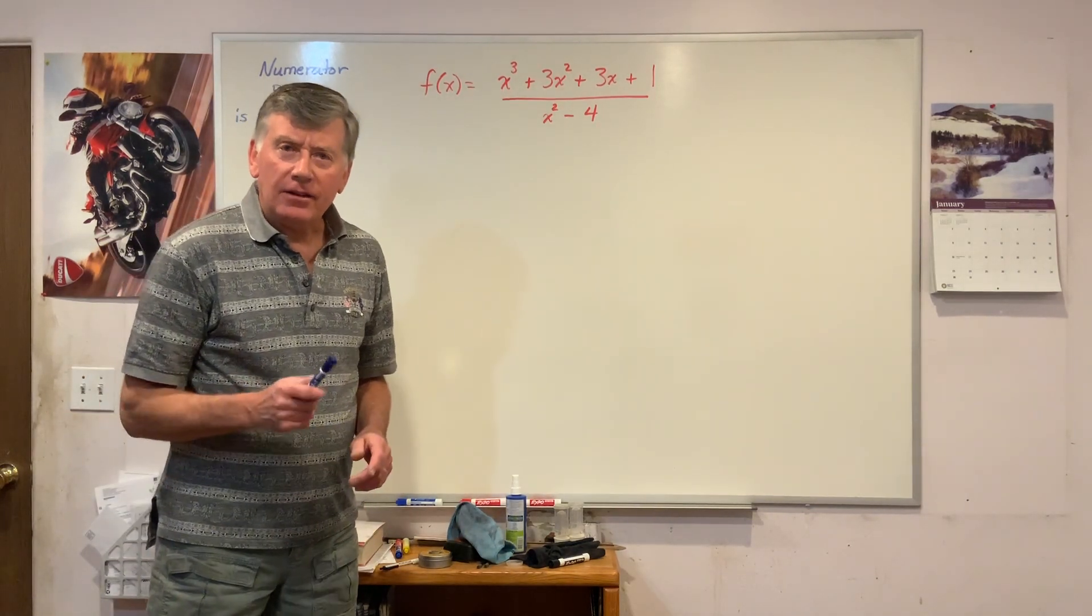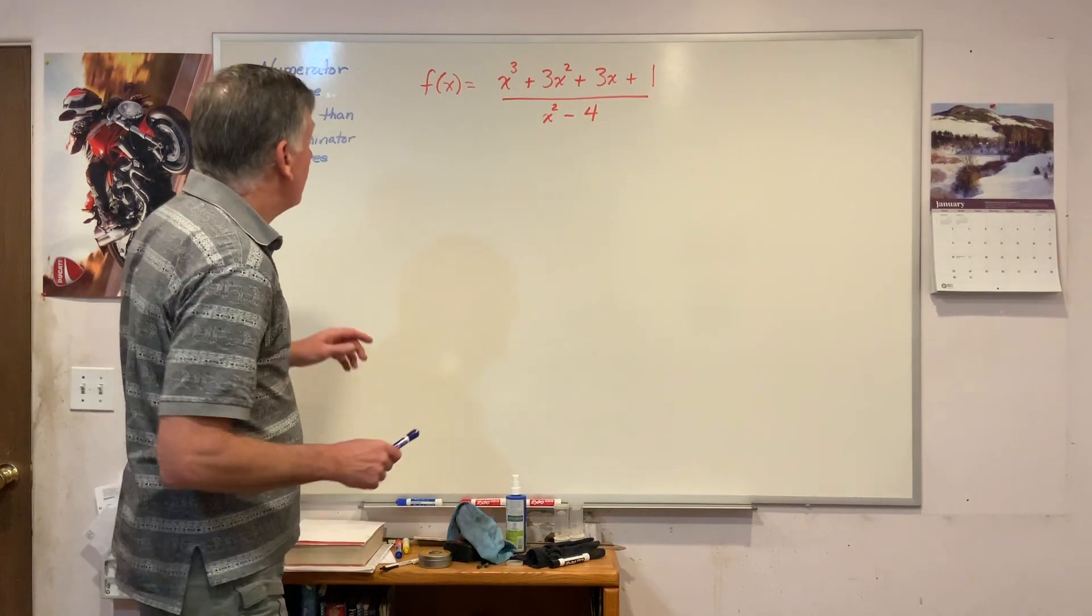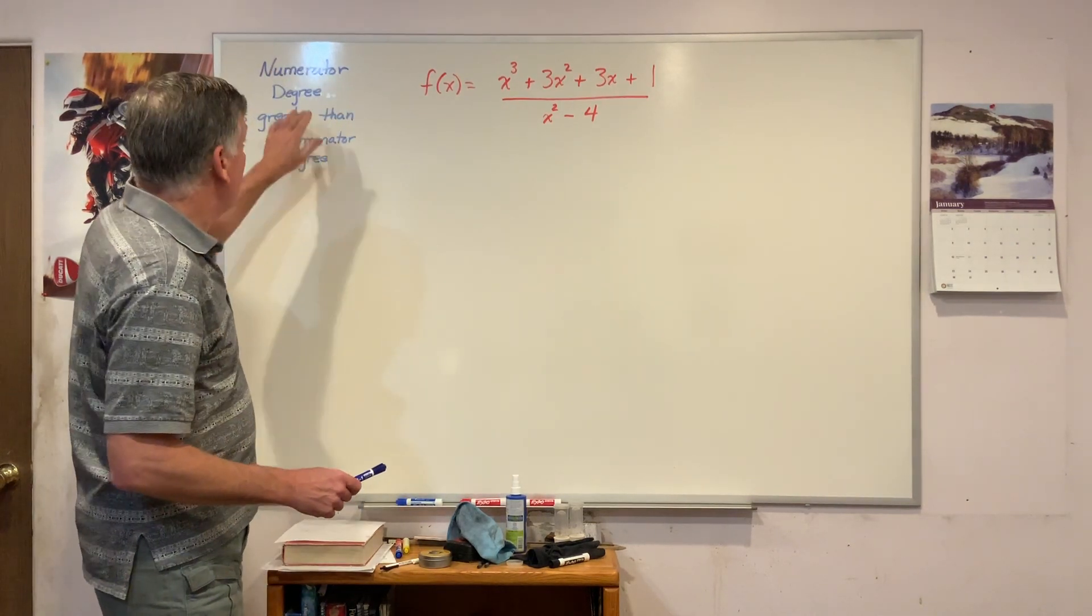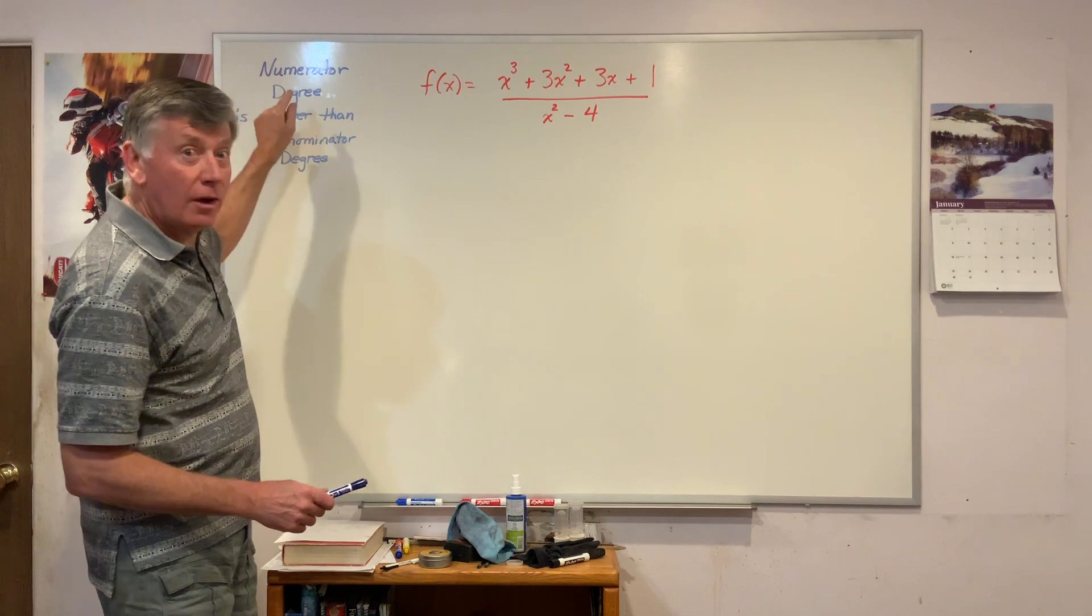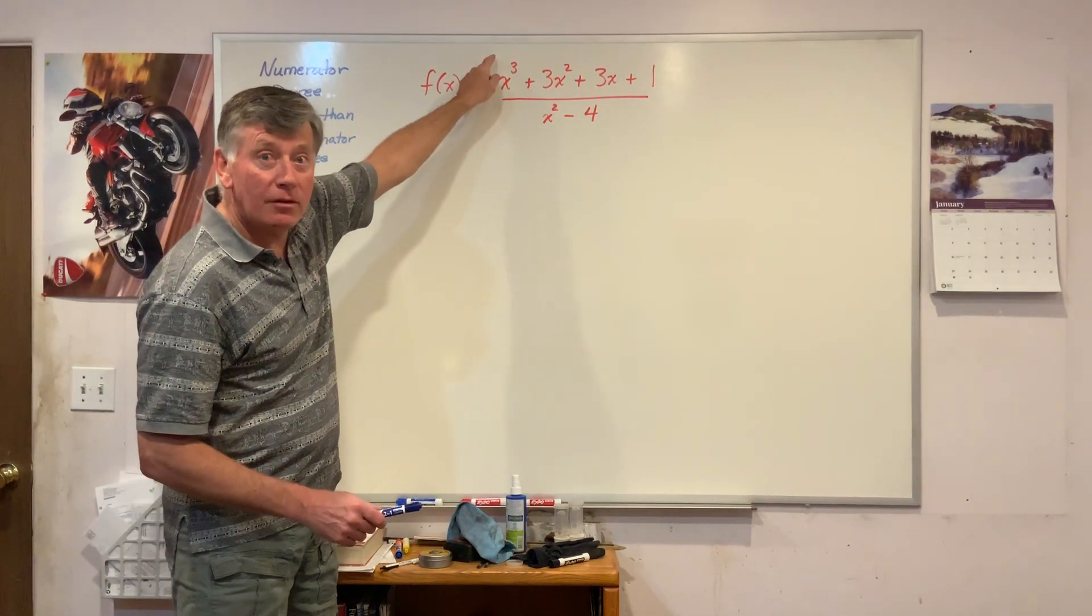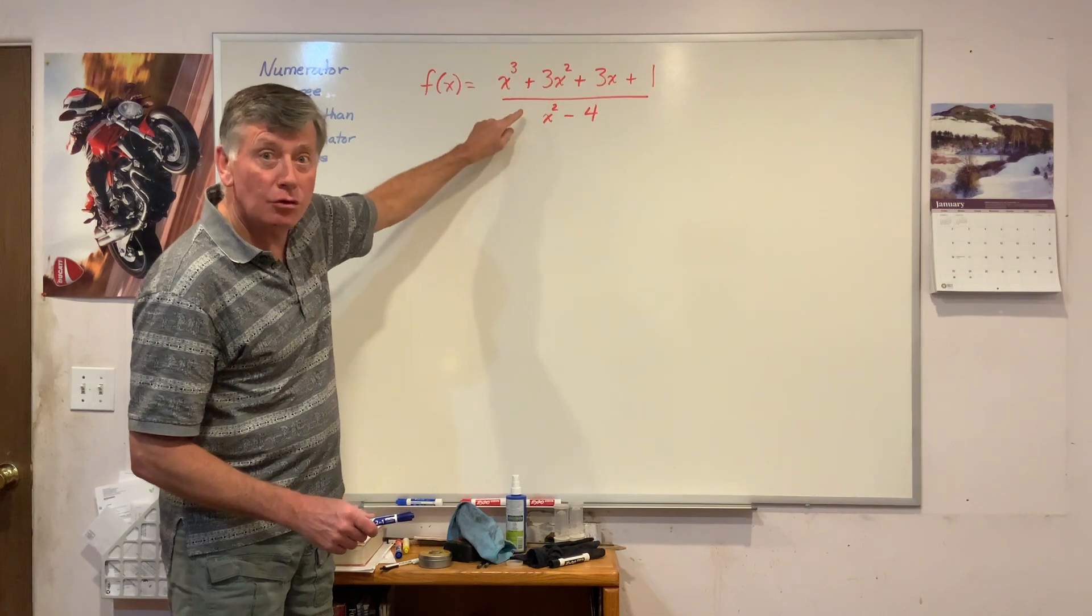Here is my last case for comparing the degree of the numerator versus the denominator, and that's where the numerator degree is greater than the denominator, like I have here. Degree of 3 on top, degree of 2 on the bottom.